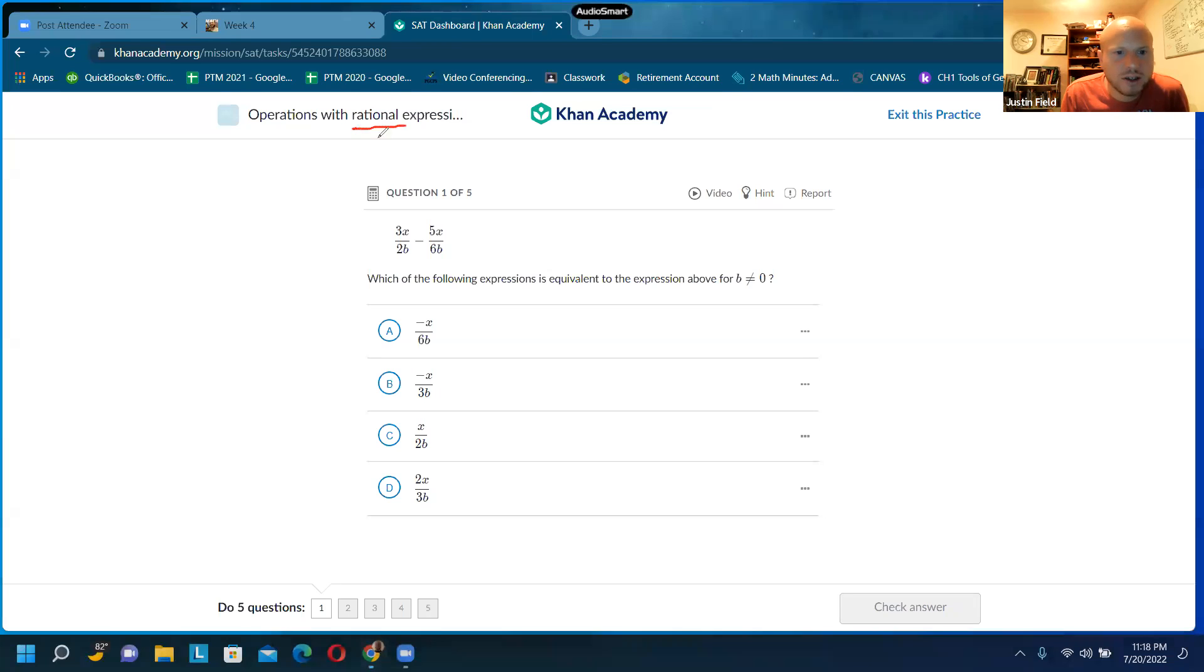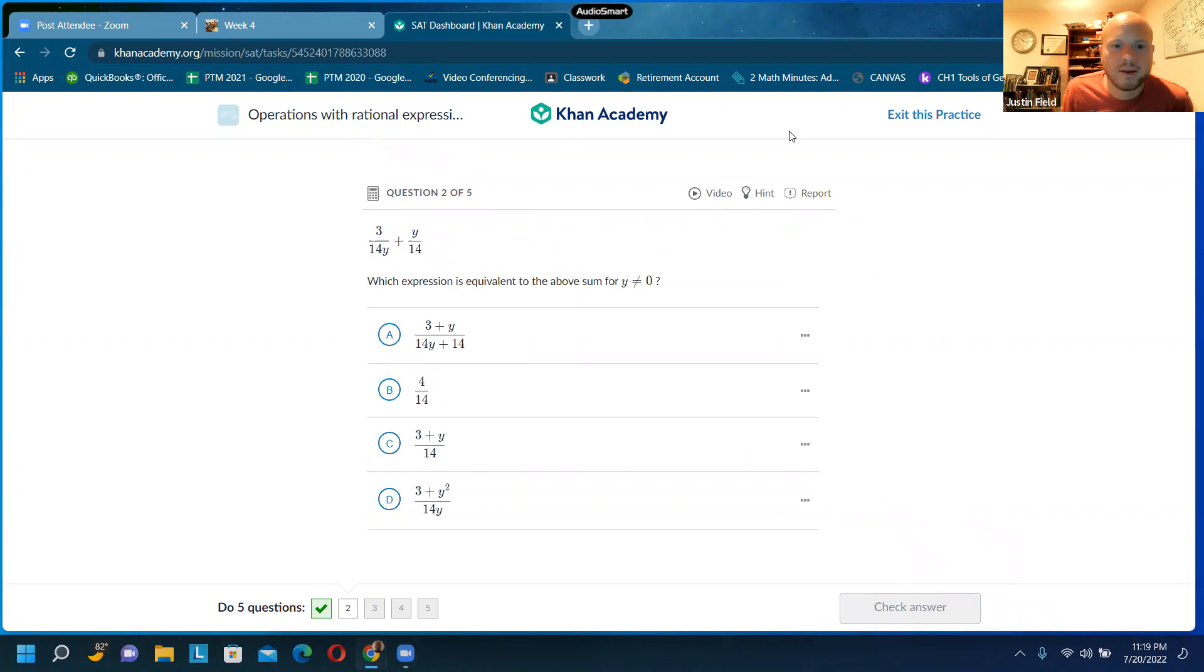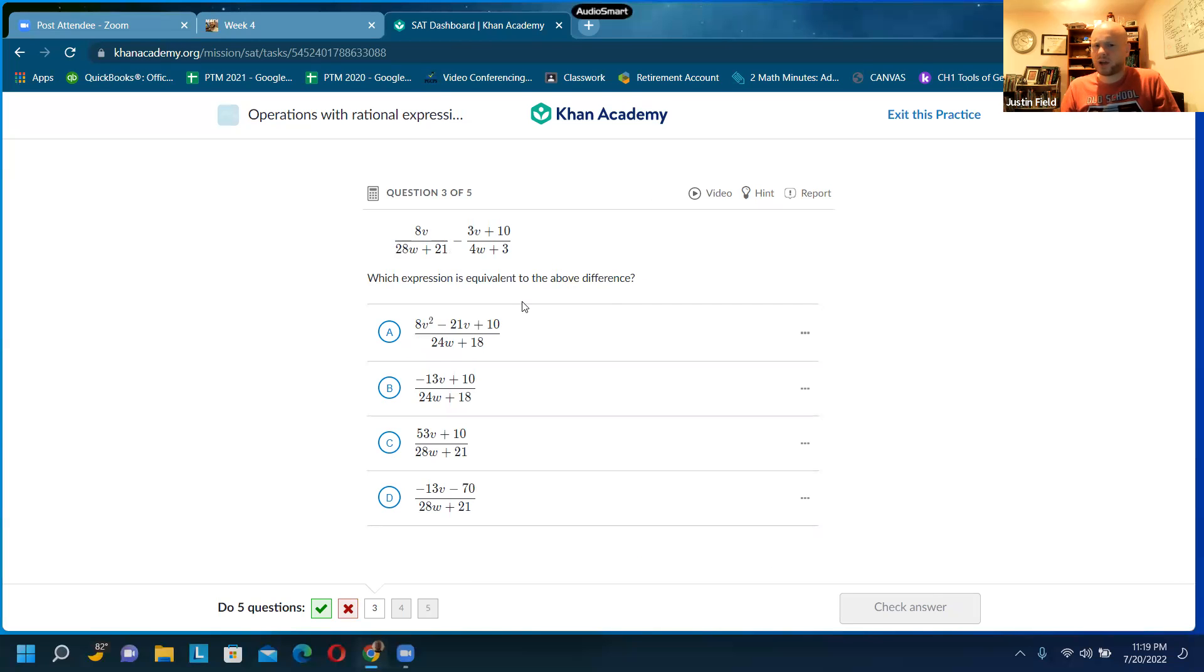Operations with rational. Rational means in math, it means fraction. So here we have fractions. So we need common denominators. We want to combine these like terms. If we multiply the first one by three, we will do that. We'll make that nine X over six B minus five X over six B. And that would be four X over six B, which I do not see, but I can reduce that to two thirds X B. That's D. Get those common denominators. Multiply the second one by Y. You'll get it.